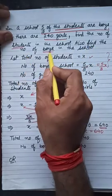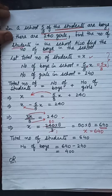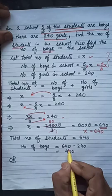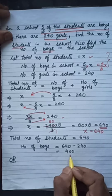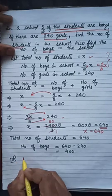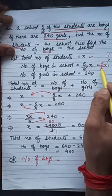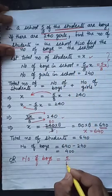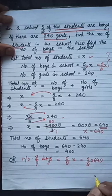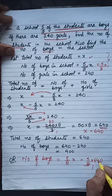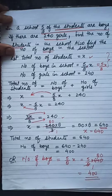We also have to find the number of boys. Number of boys = total students − number of girls = 640 − 240 = 400. Alternatively, using our earlier expression, number of boys = 5/8 × x = 5/8 × 640. Simplifying: 640 divided by 8 is 80, and 80 × 5 = 400. So the number of boys in the school is 400.